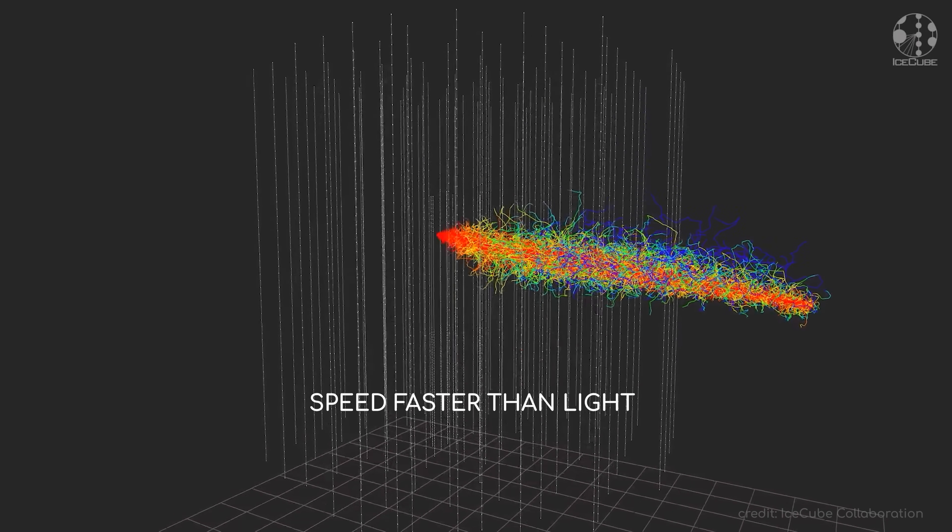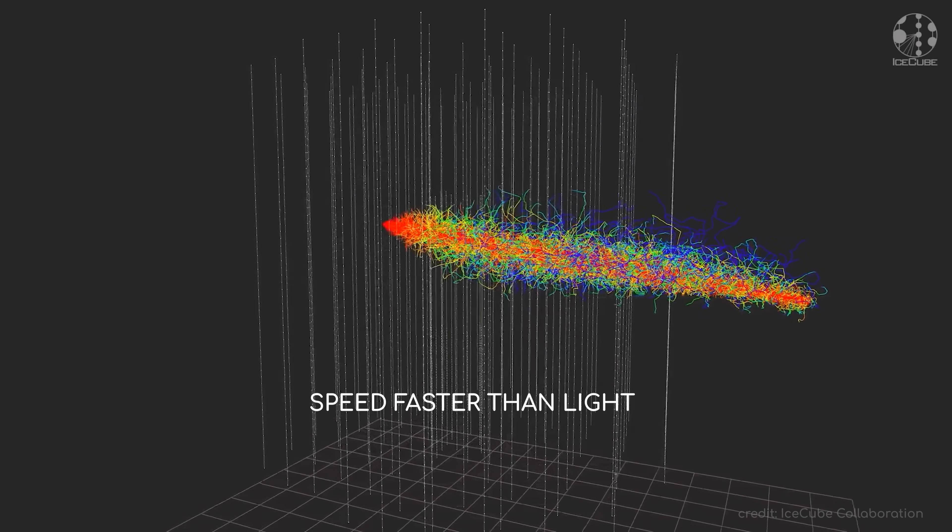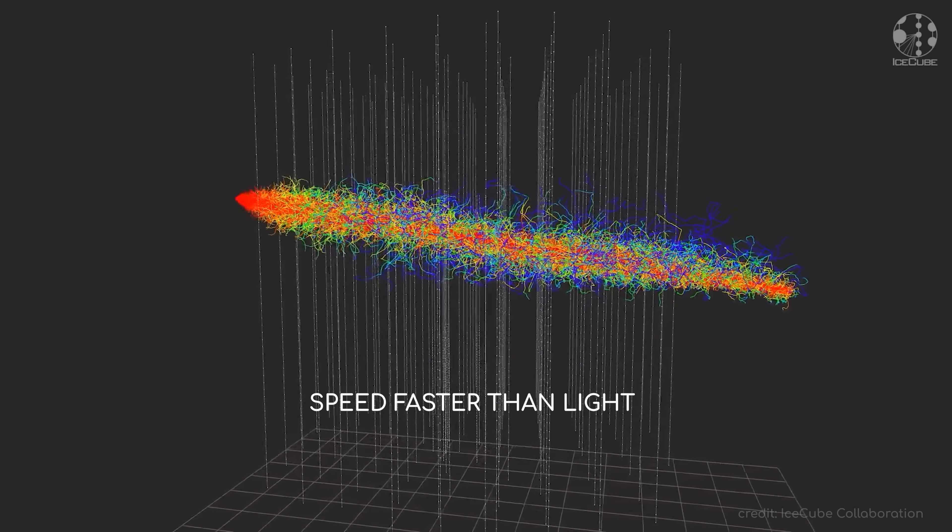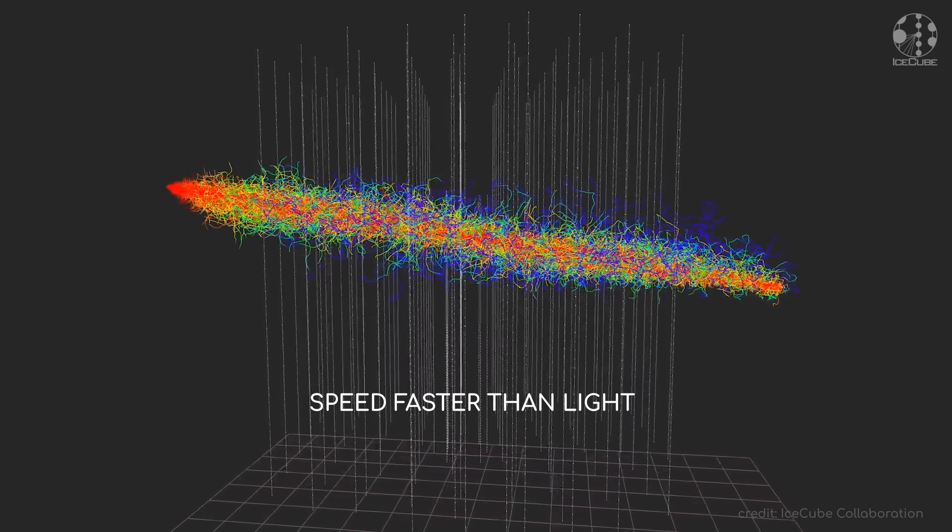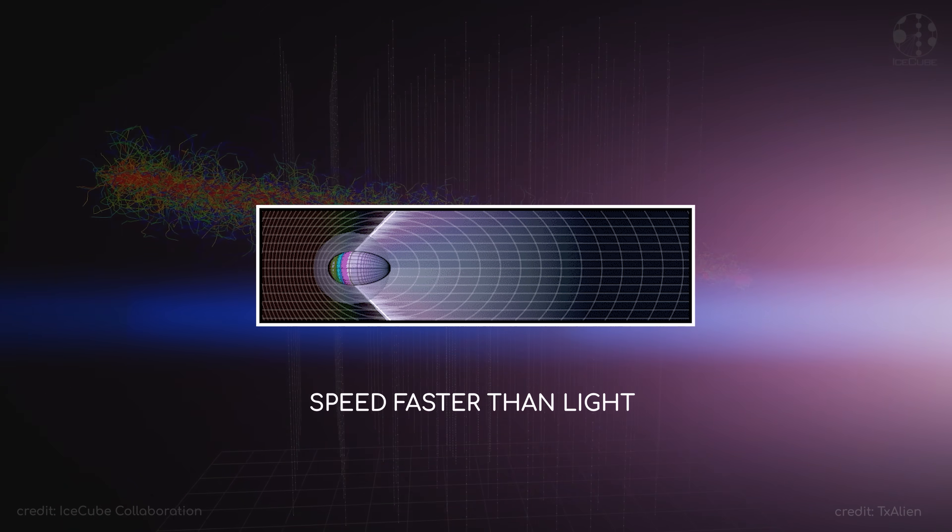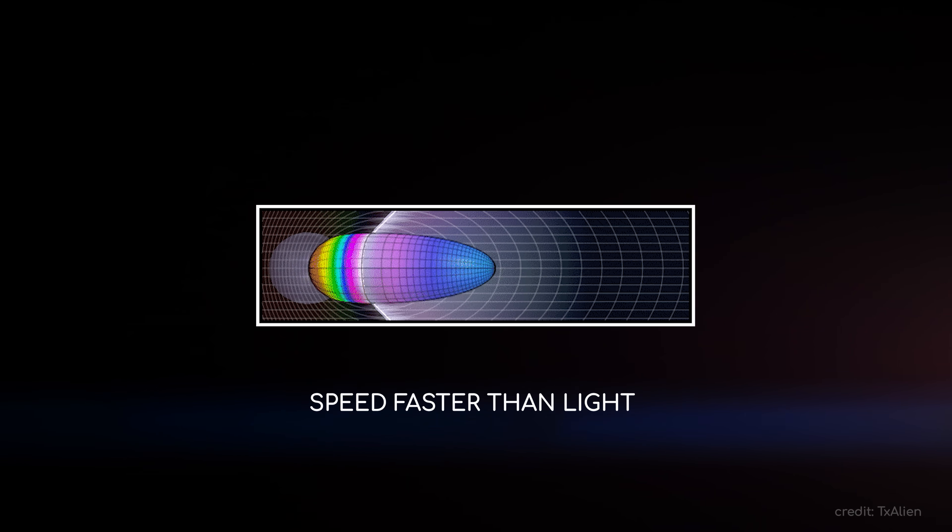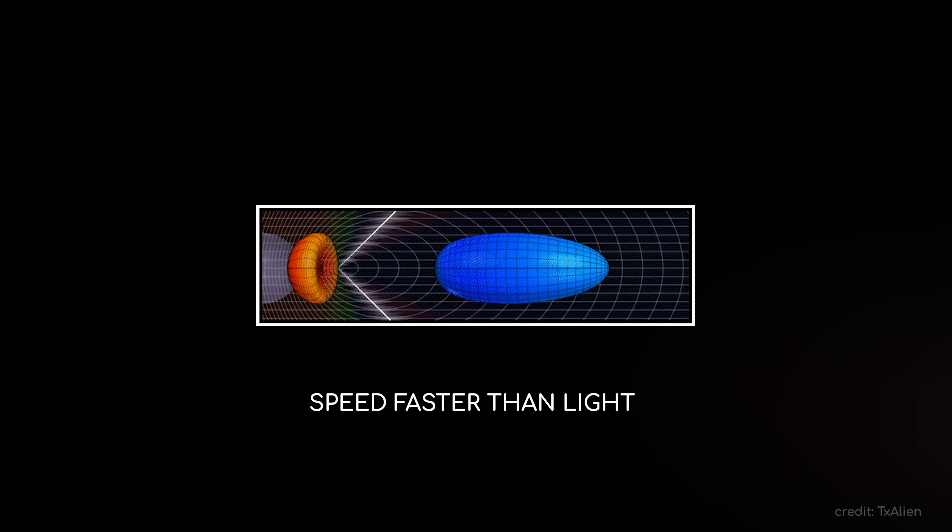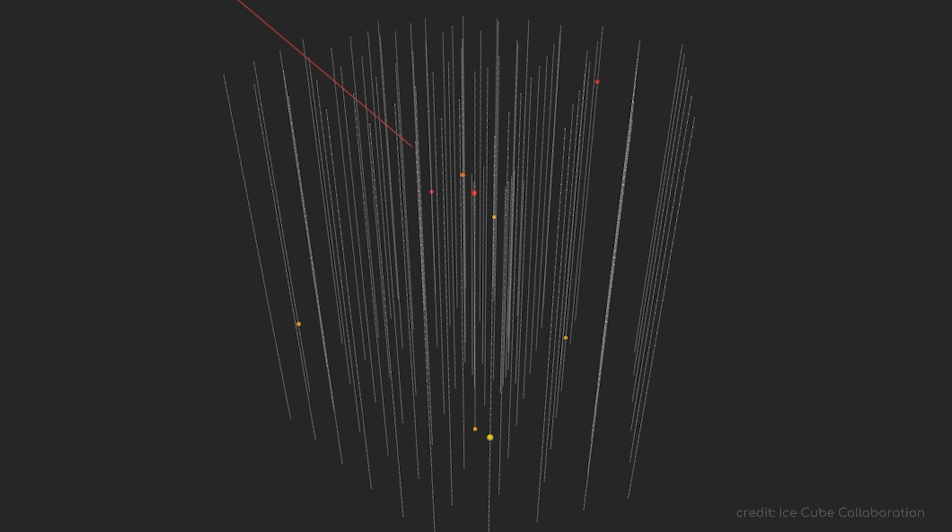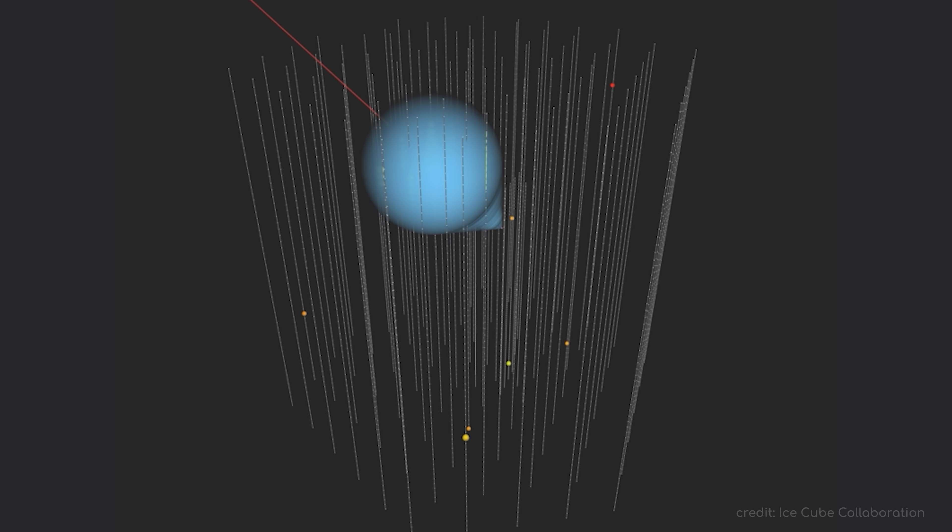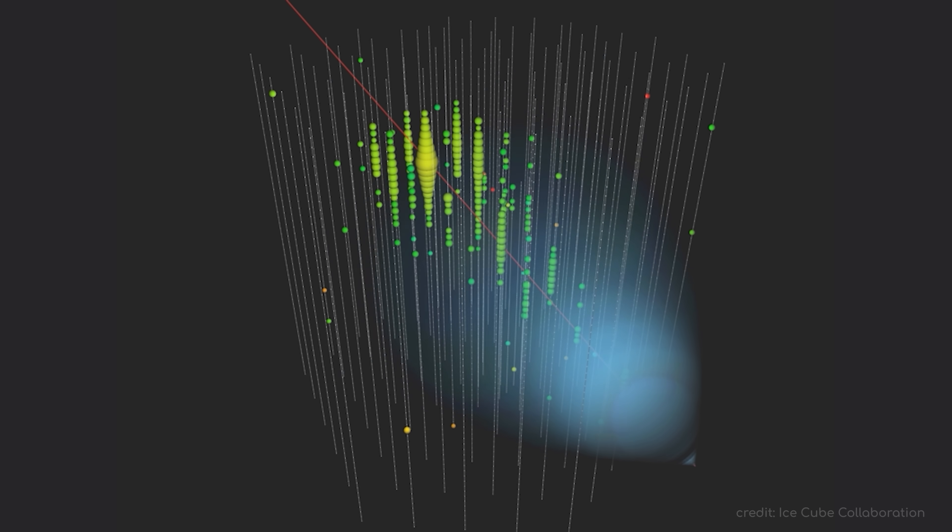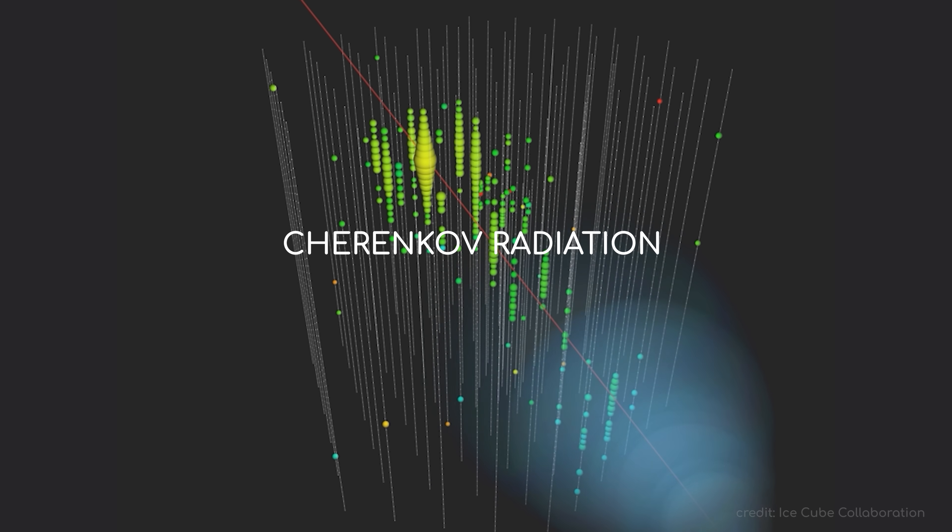Now, let's be clear, nothing can move faster than light in a vacuum, but in other materials such as ice, liquid water and glass, light can be outpaced. This isn't a violation of physics, but rather a consequence of light slowing down more than other particles within the ice. As the muon races beyond its photon counterparts, it generates a shockwave of blue light expanding in a cone-shaped pattern out from its path, an eerie phenomenon known as Cherenkov radiation.